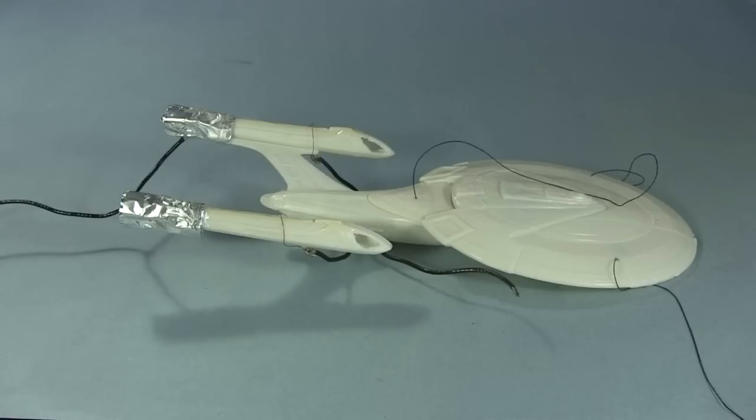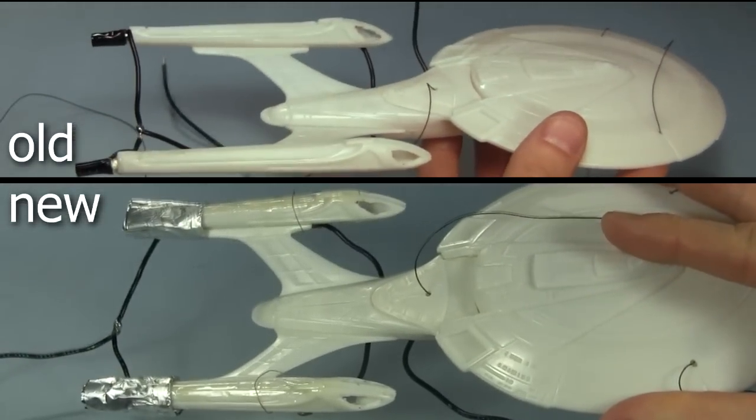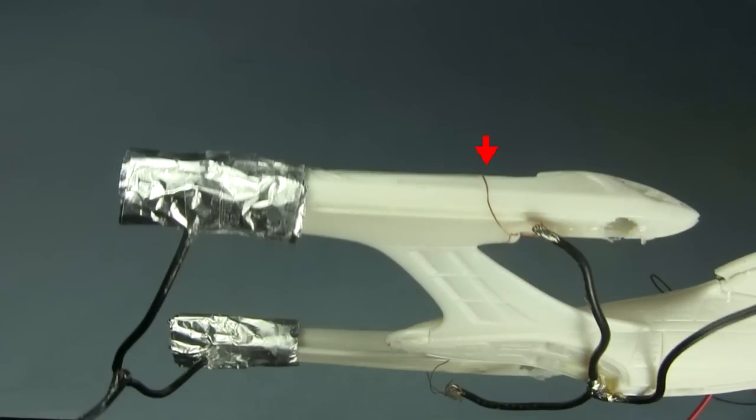And here's the Enterprise. In the video where I showed how to add ion propulsion to it, I did it a bit differently. This way works better. I simply made a loop of thin bare wire here for the sharp edge and wrapped the aluminum foil with the smooth edge around here.